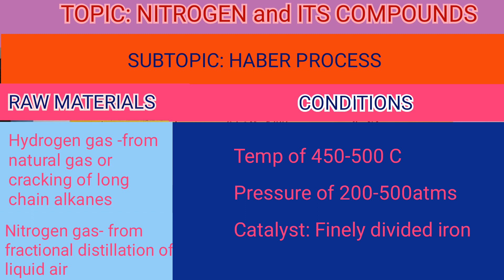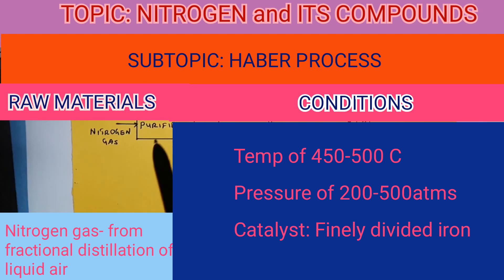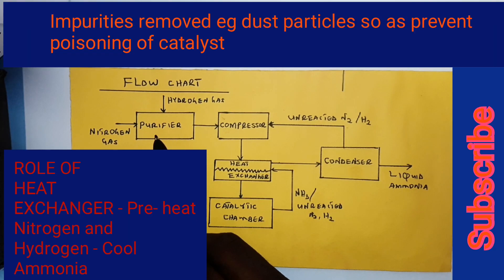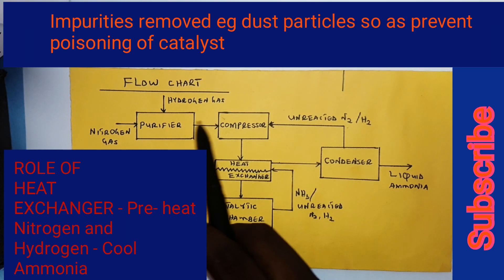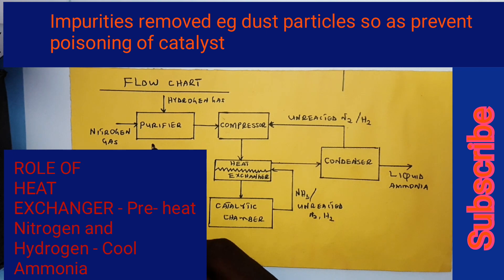Sometimes the catalyst efficiency can be improved by using aluminum oxide as a promoter. The parts of the process are the purifier, compressor, heat exchanger, catalytic chamber, and condenser. It is important to learn how the reactions occur in the Haber process.